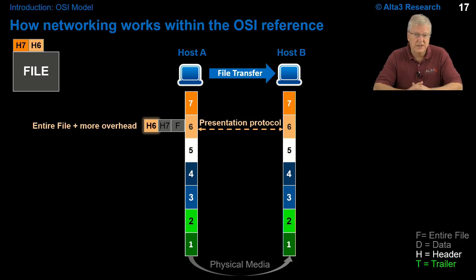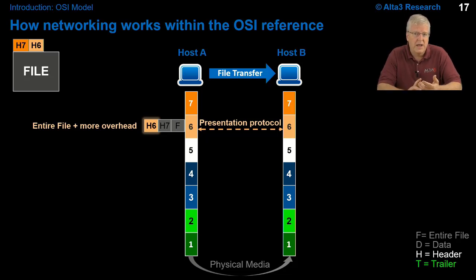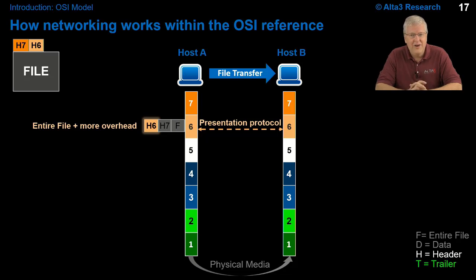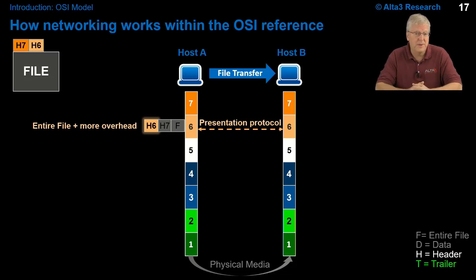At the presentation layer (layer 6), we are concerned with how information is encoded or encrypted. If it's voice, how would it be encoded? If it's media, what codec would apply? If it's information appearing on a screen, is it bold, blinking, bright, dim? The presentation layer handles how the information should appear at the other side so it looks as intended from the sending perspective.